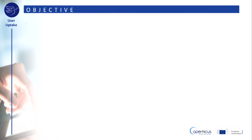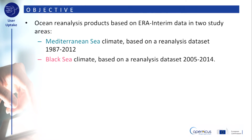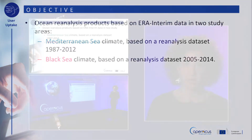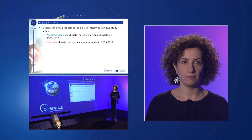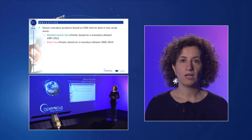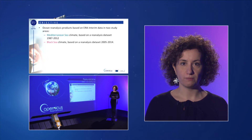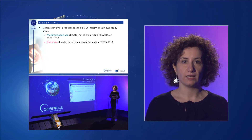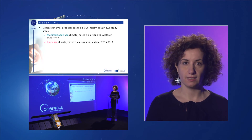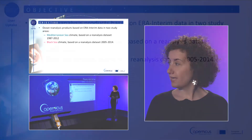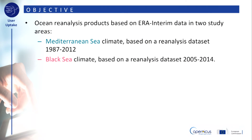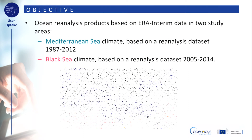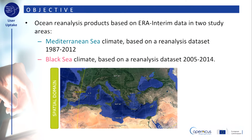The proposed downstream use case shows the applicability and usability of the ERA Interim data for ocean reanalysis in order to understand the climate of regional ocean configurations. In particular, it will show the high-resolution short-term reconstruction of the Mediterranean Sea climate based on reanalysis datasets between 1987 and 2012, and of the Black Sea climate based on reanalysis datasets between 2005 and 2014.